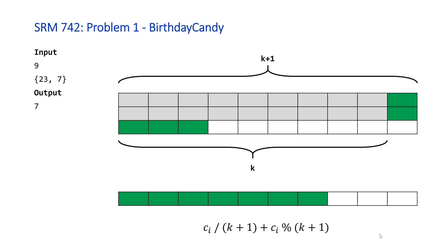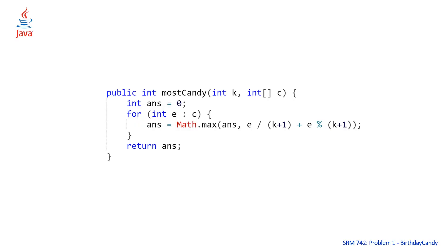So the formula for the i-th candy is: (candy[i]/(K+1)) + (candy[i]%(K+1)). Starting with the Java solution — the most straightforward — we declare an integer answer, use Java 8's enhanced for loop, plug each element into the formula, and set answer to the maximum of the current answer and the computed value. Once the loop finishes, we return the answer.